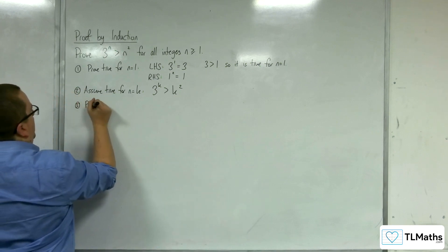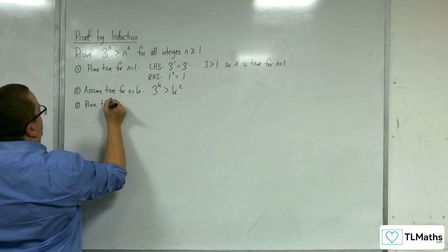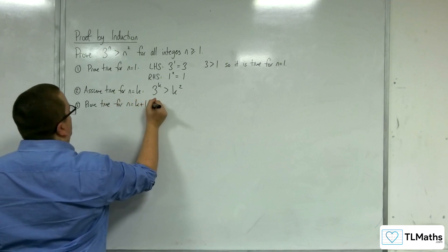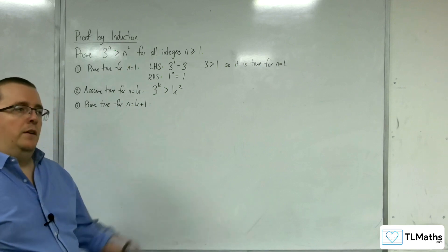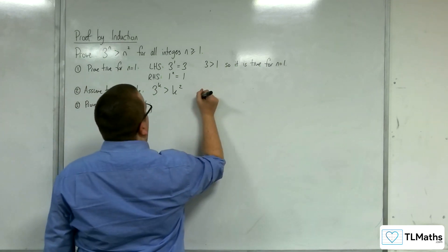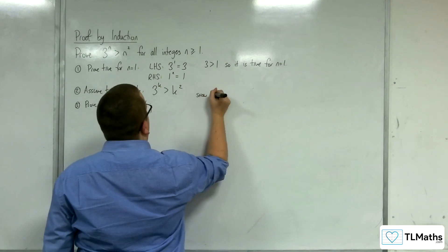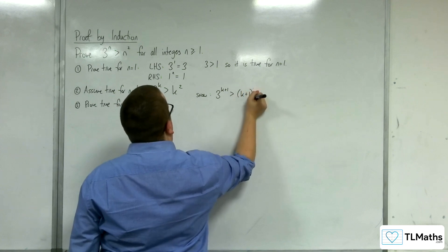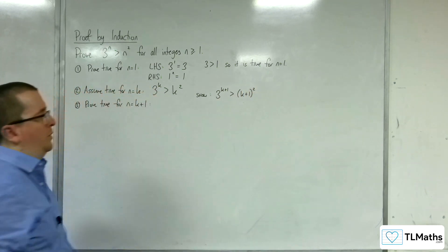Step 3: Prove true for n equals k plus 1. So thinking ahead to what we want to show, we want to show that 3 to the k plus 1 is greater than k plus 1 squared. That's what we want to show.